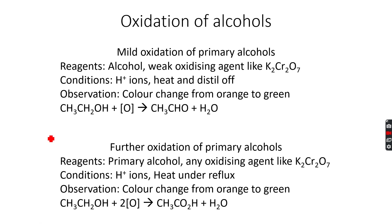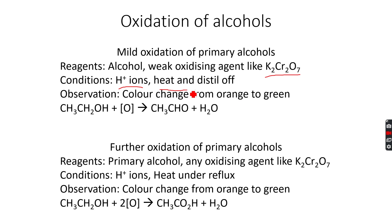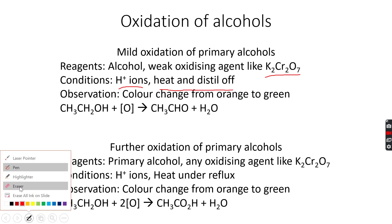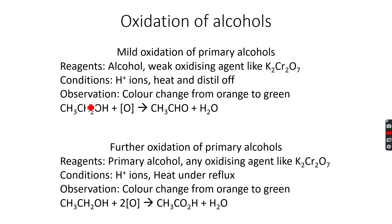We are only going to do the oxidation of primary alcohols and secondary alcohols. Primary alcohols also have two stages of oxidation. For the mild oxidation of primary alcohols, the reagent is a weak oxidizing agent like potassium dichromate. The condition is H⁺ ions — because the potassium dichromate needs to be acidified — plus heat and distill off.